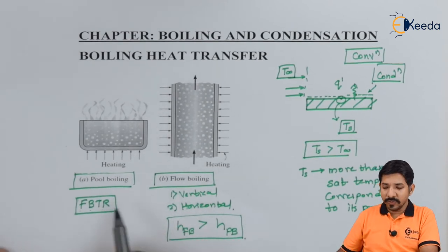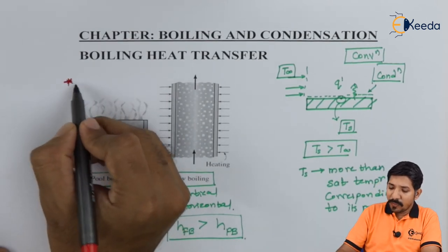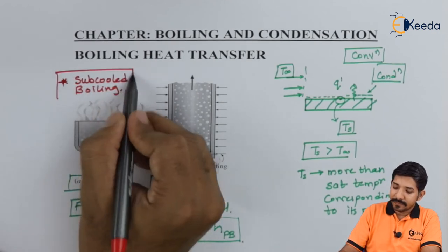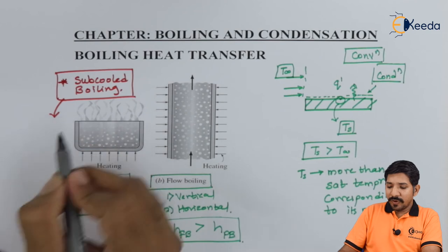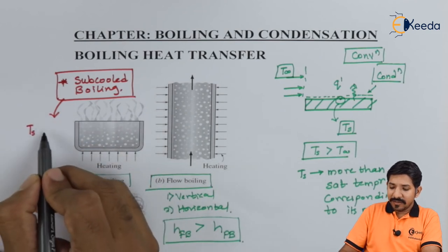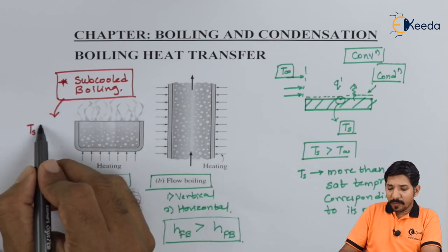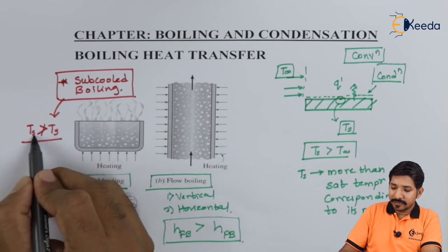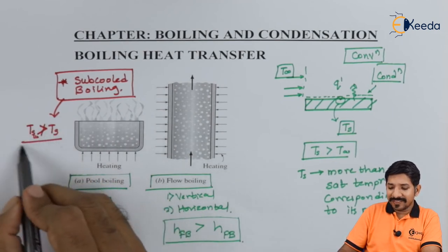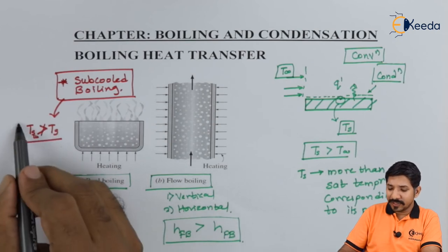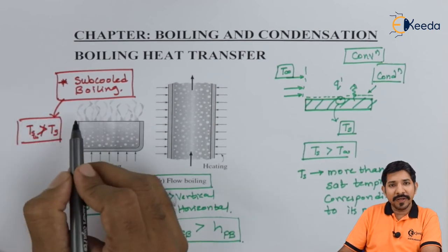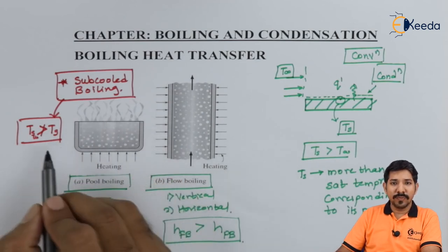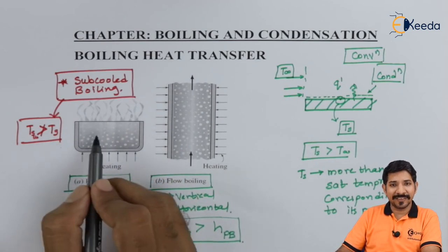Apart from these two, there is subcooled boiling. In subcooled boiling, the surface temperature may not be equal to or greater than the saturation temperature — it is less than the saturation temperature. Bubbles form very near the surface but are never carried away; those bubbles die on the surface itself.